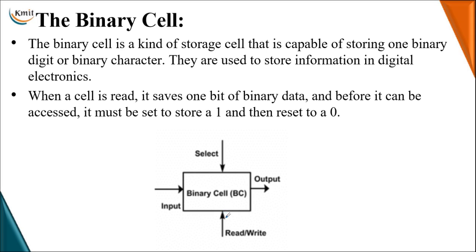Once a binary cell is selected, we determine whether the operation is a read or a write. If you want to take data from the binary cell, that is a read operation. If you want to store data into the binary cell, that is a write operation. This depends on the control signal — read or write. When read is enabled, the data stored previously in the binary cell is retrieved from the output terminal. When write is enabled, the input signal is enabled and binary zero or one is transferred through the input.